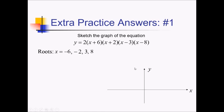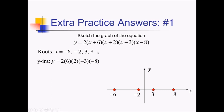Let's graph those out. We have negative 6 somewhere over here to the left, negative 2 is closer to the y-axis, 3 is on the right side of the y-axis, and 8 is further out still. We also need the y-intercept. If we plug 0 in for all the x's, we're looking at 2 times 6 times 2 times negative 3 times negative 8. That's 2 times 6 is 12, times 2 is 24, times negative 3 is negative 72, times negative 8 gives us positive 576.